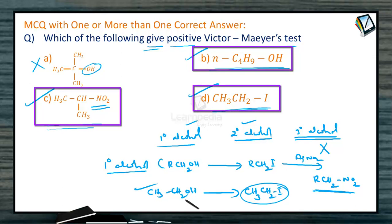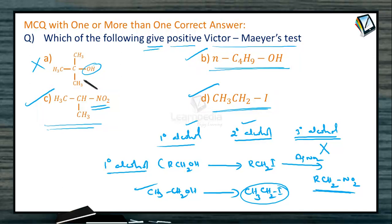So thus B, C, D are the correct options. It is the only tertiary alcohol A which does not give Victor-Mayer test.